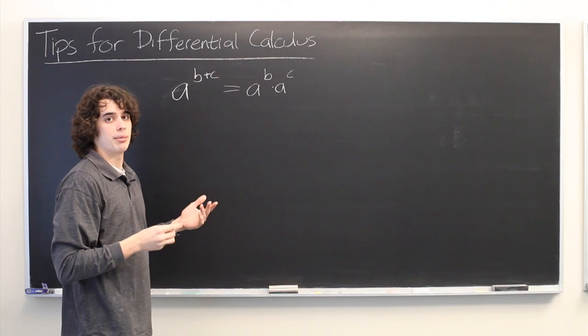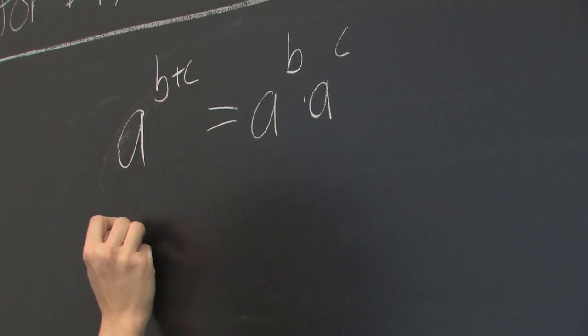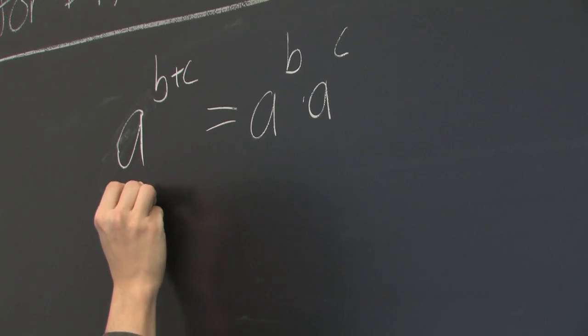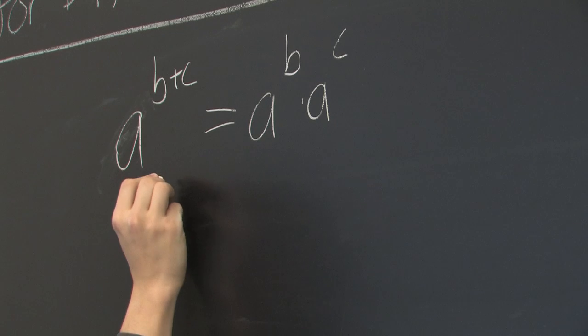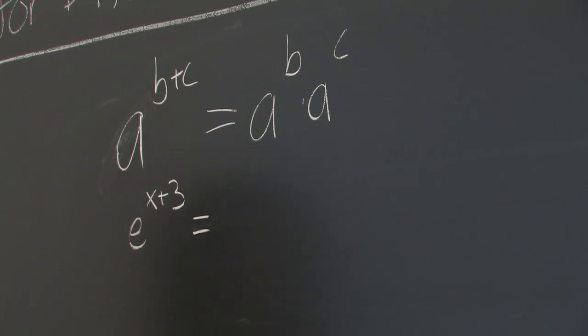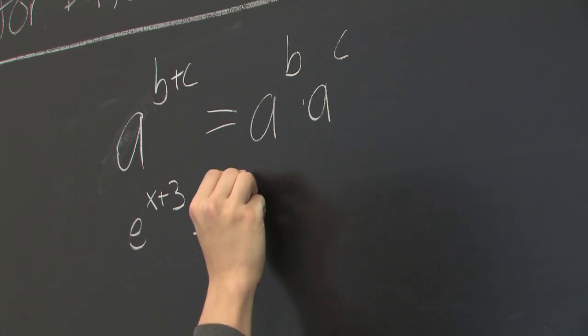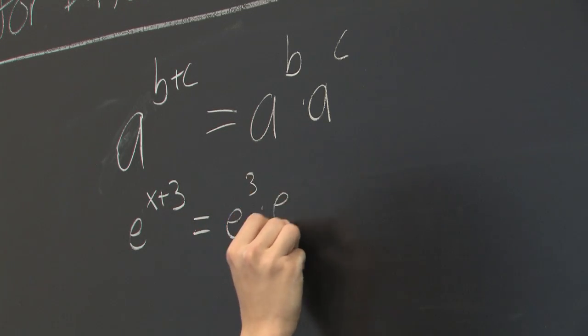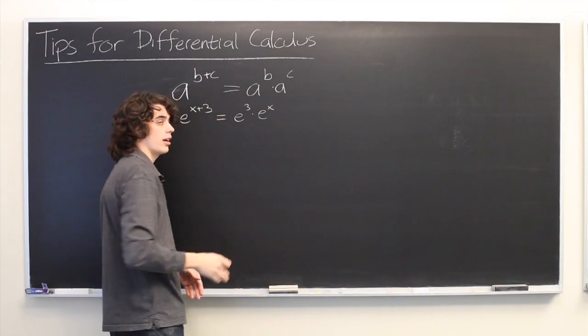So one example of when this might be helpful in calculus, let's say you've got the function e to the x plus 3. There may be times when it's more helpful to think of this as being e cubed times e to the x, where e cubed is just a constant.